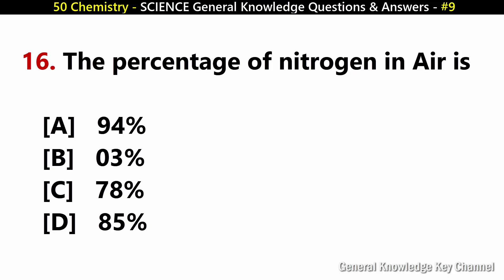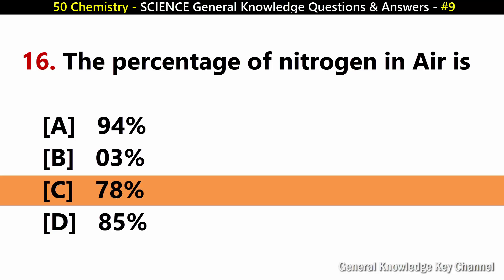The percentage of nitrogen in air is? Answer C: 78%.